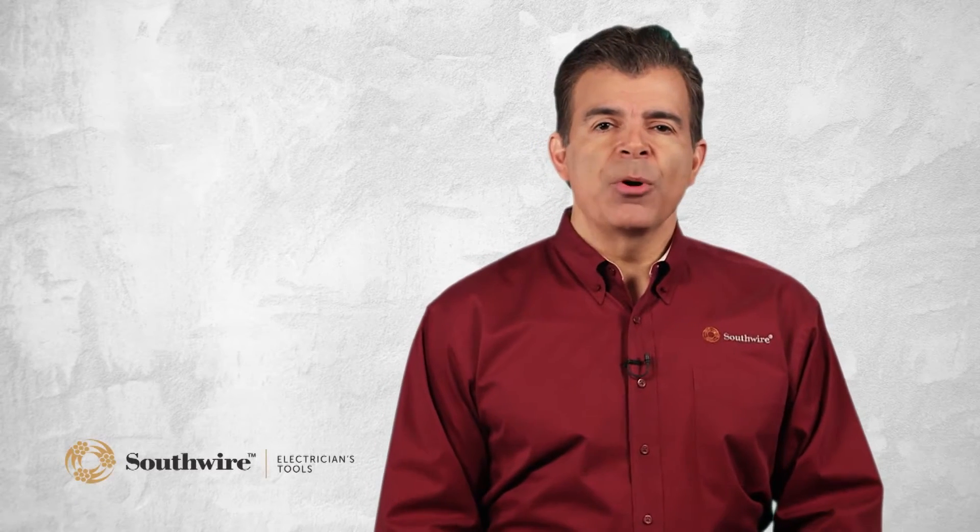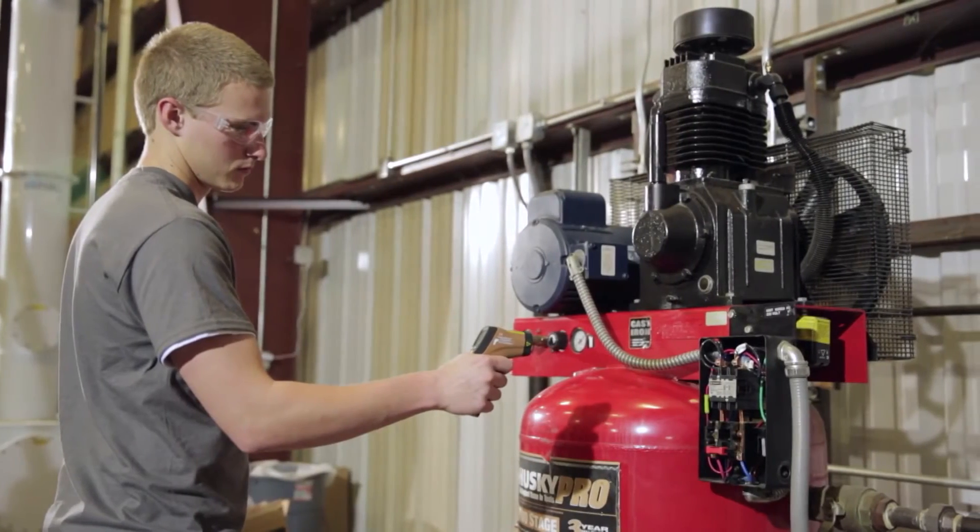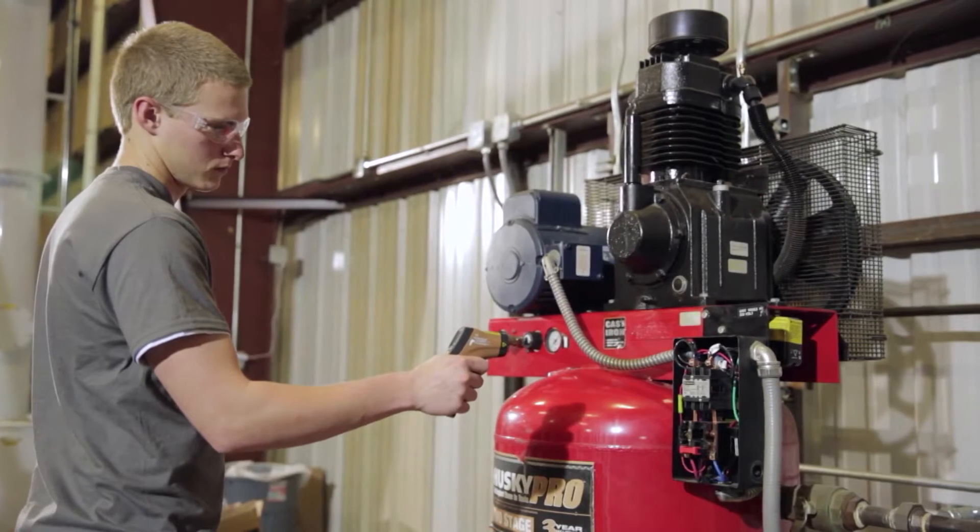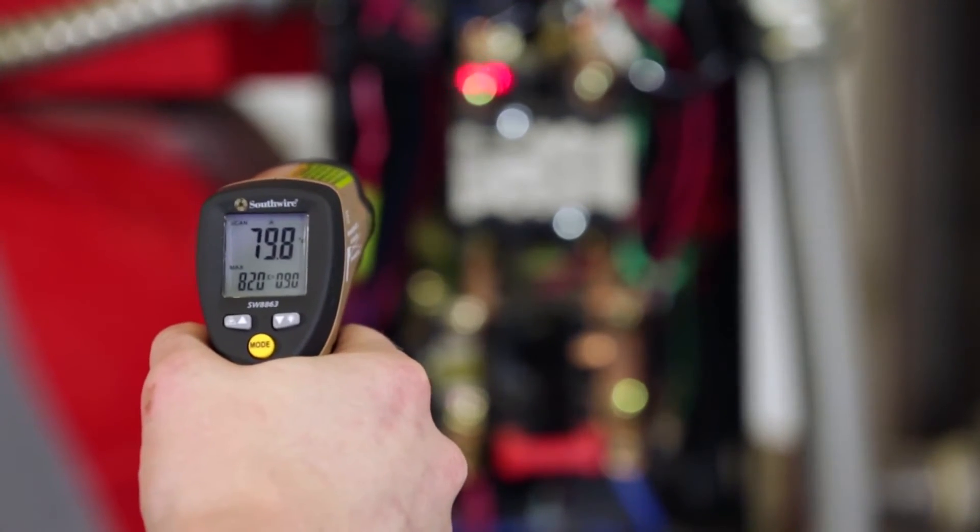Converging laser pointers quickly show the user the optimum measuring distance, allowing accurate spot temperature measurements of an area that is as small as a half inch in diameter. This is a very useful feature when trying to locate hot spots on small objects such as electrical connections, fuses, circuit breakers, motor bearings and machinery.